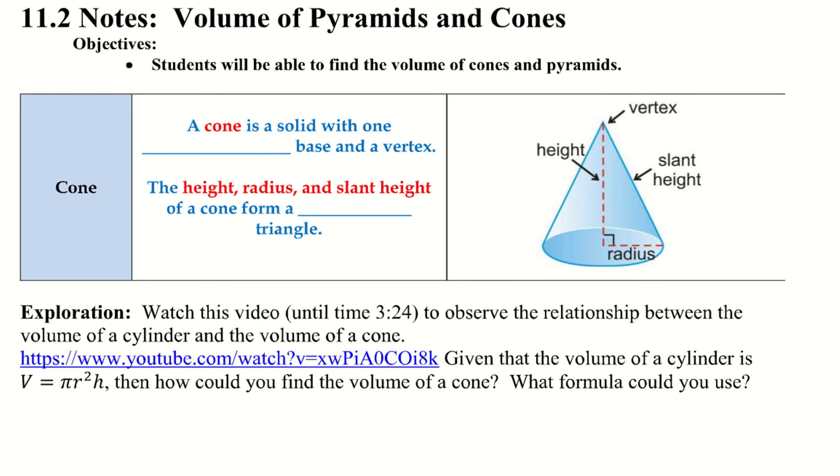Let's go ahead and start with what a cone is. A cone is a solid with one circular base and a vertex. The height, radius, and slant of a cone form a right triangle.